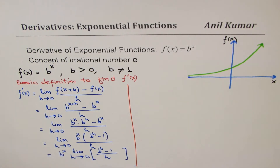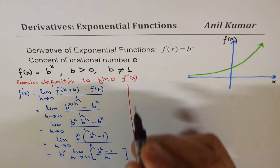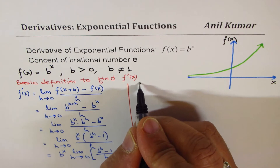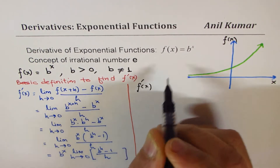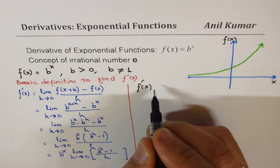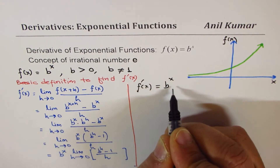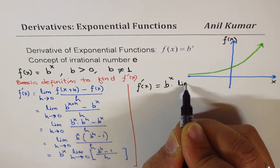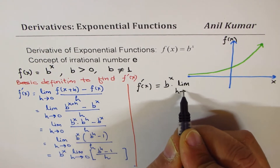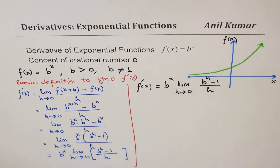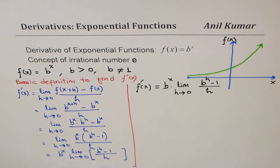So from the first principle, or basic definition, the derivative of any exponential function can be written as b to the power of x times limit h approaches 0 of b to the power of h minus 1 over h. We can use a calculator to find the limit of this expression for different values of b.